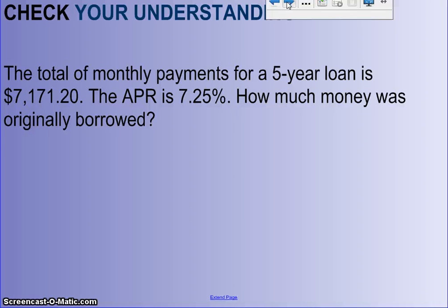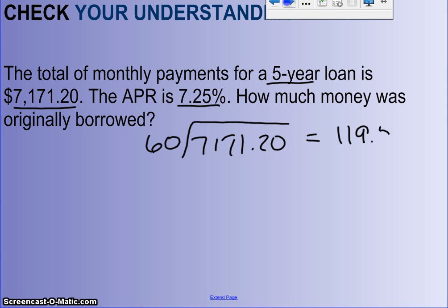Let's see how you did. It says the total of the monthly payments of a five-year loan is $7,171.20, and the APR is 7.25%. How much money was originally borrowed? We're going to have to do some guessing here. We know $7,171.20 was paid over a 60-month period. If we take the $7,171.20 and divide it by 60, we know there were monthly payments of $119.52.